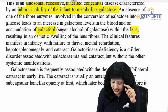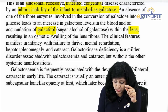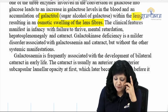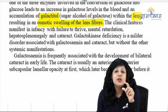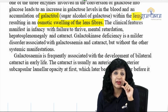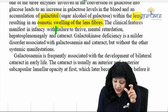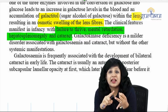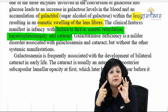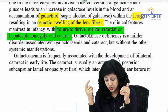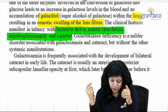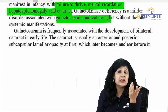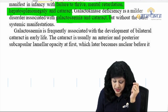The accumulation of galactitol within the lens leads to osmotic swelling of the lens fibers. In diabetes it was sorbitol; in galactosemia it is galactitol. The clinical features are very important: failure to thrive, mental retardation, hepatosplenomegaly, and cataract — because the child is not getting glucose. These features came straight into the JIPMER paper from class notes. Non-classical galactosemia — galactokinase deficiency — is a milder disorder associated with galactosemia and cataract but without other systemic manifestations.